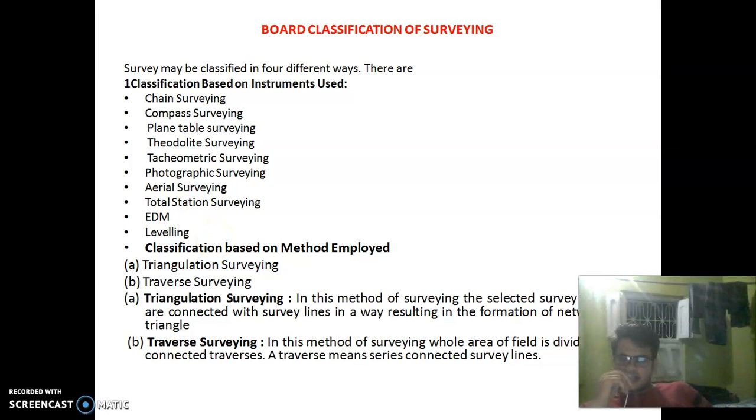Classification based on method employed includes Triangulation Surveying and Traverse Surveying. In Triangulation Surveying, the selected survey stations are connected with survey lines in a way resulting in the formation of a network of triangles.